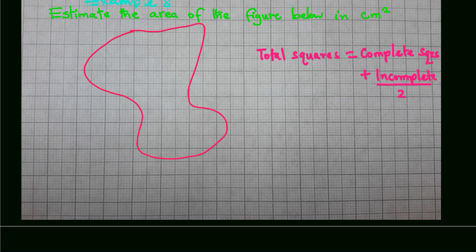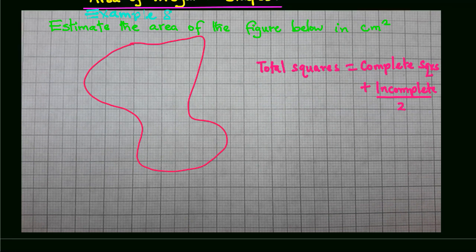And therefore the area will be the number of squares times area of each square. Now in this example, so we can obtain number of complete squares.